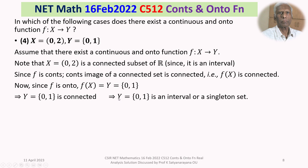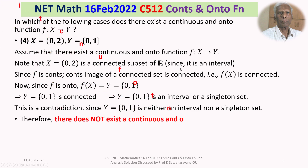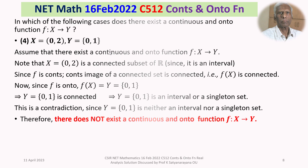But {0,1} being connected means it is either an interval or a singleton set, which it is not. This is a contradiction because the doubleton set {0,1} is neither an interval nor a singleton set. Therefore it is a contradiction, and our assumption is wrong. Therefore, there does not exist a continuous and onto function f from X to Y in this case.